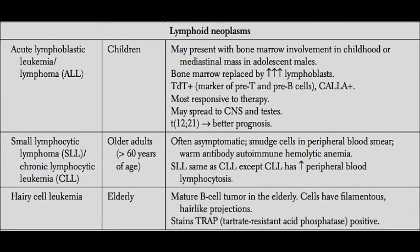TdT is a marker that's only present on immature T cells and B cells. So if you take a biopsy of bone marrow from these patients and you have a ton of lymphoblasts present, and you check them for TdT and they're positive, you're dealing with ALL. Another important cell surface marker in this cancer is called CALLA — common acute lymphoblastic leukemia antigen.